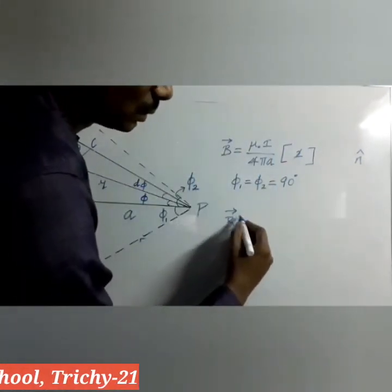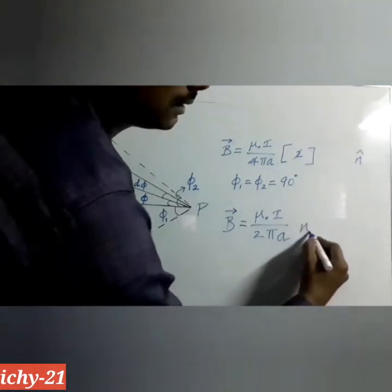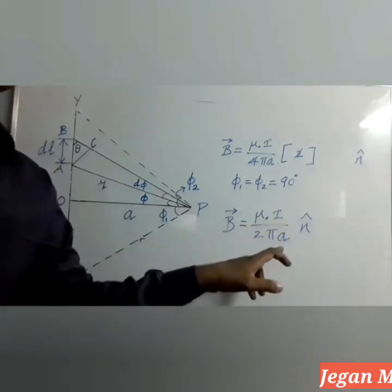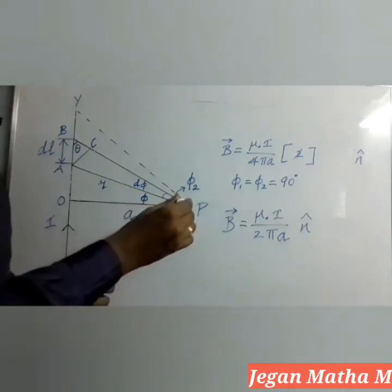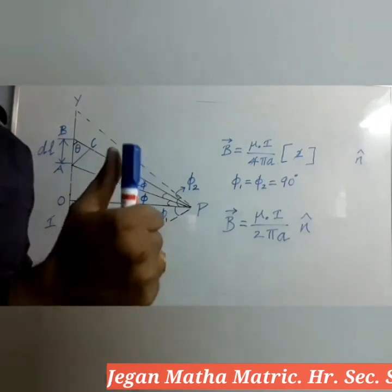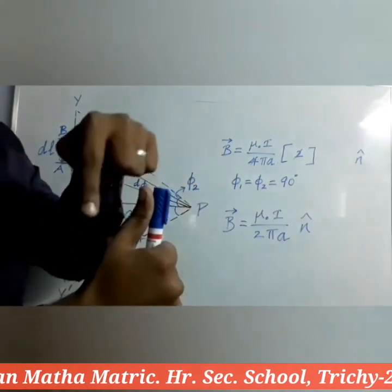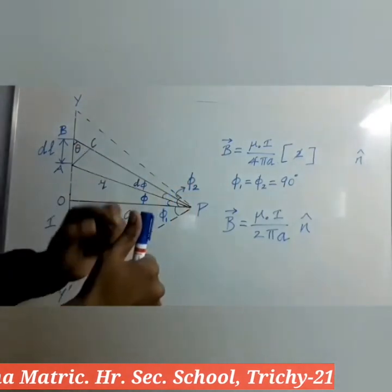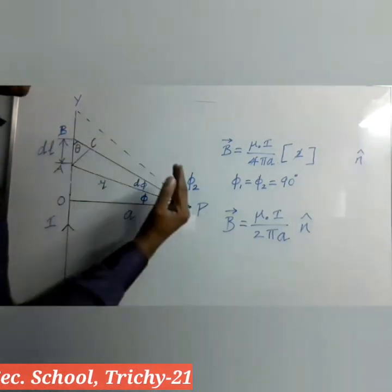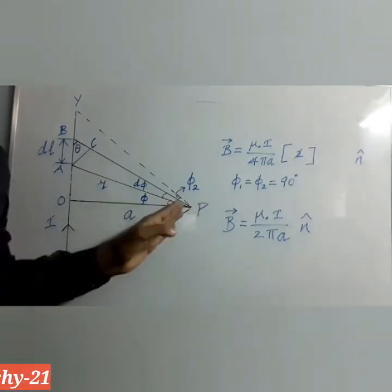So the final result is: B vector is equal to μ₀I by 2πA into n̂. By using the right-hand thumb rule, we can find the direction of the magnetic field. Here, μ₀I by 2πA is the magnitude only. At point P the field acts into the board. To apply the right-hand rule, hold the pin like a current-carrying conductor — the thumb shows the direction of current moving upwards. Rotating from joint to nail gives an anticlockwise direction, so when current moves upwards the magnetic field around the conductor is in the anticlockwise direction, meaning at point P it is into the board.